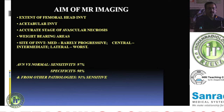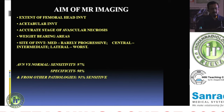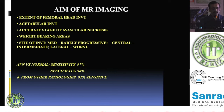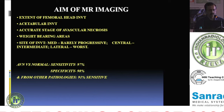You must accurately stage the AVN and determine whether weight-bearing or non-weight-bearing areas are involved. Medial lesions are rarely progressive, while lateral ones carry the worst prognosis as they bear the most weight and progress faster toward total hip replacement. MRI sensitivity for AVN versus normal is 97%, specificity is 98%, and sensitivity for differentiating AVN from other pathologies is about 91%.